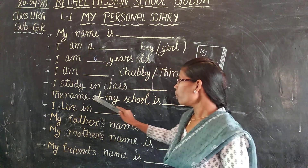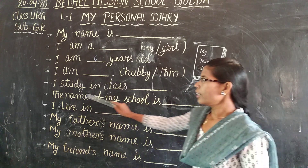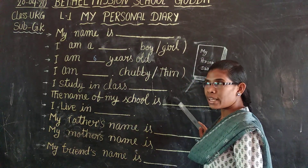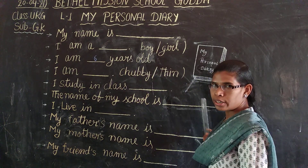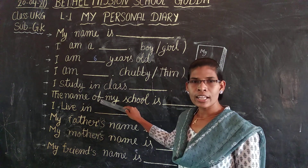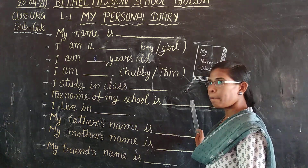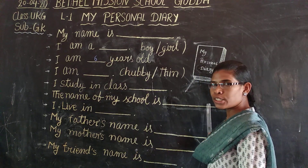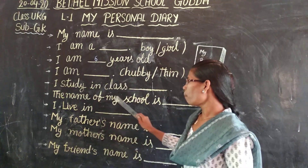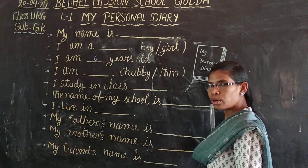Next line: The name of my school is Bethel Mission School. So in which school are you studying? Bethel Mission School. So you have to write here: The name of my school is Bethel Mission School.